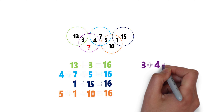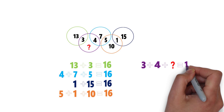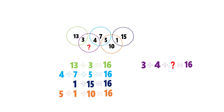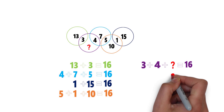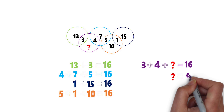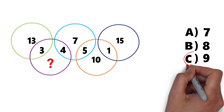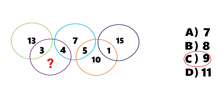To calculate the missing number (the question mark), we add 3 plus 4 plus the question mark and set it equal to 16. After doing the calculation, the missing number equals 9. So the correct choice here is choice C, 9. Hopefully you've nailed this question and now know how to answer similar problems on the test.